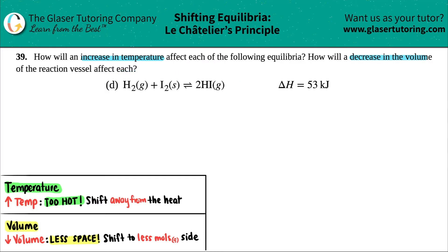So the first thing is I'm just going to rewrite this a little bit bigger just so that we can work with it better. We have H2 gas plus I2 solid comes to equilibrium with two HI gas.